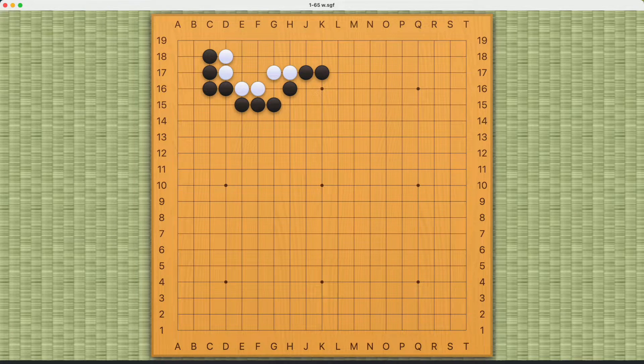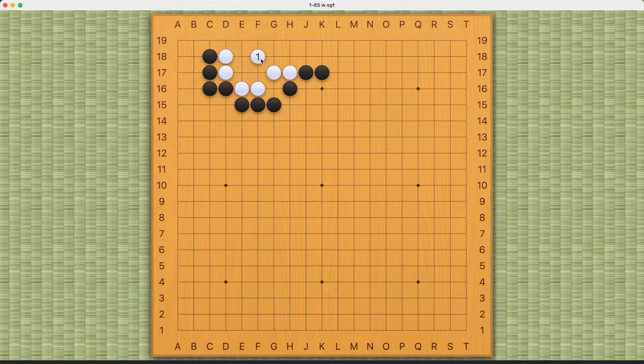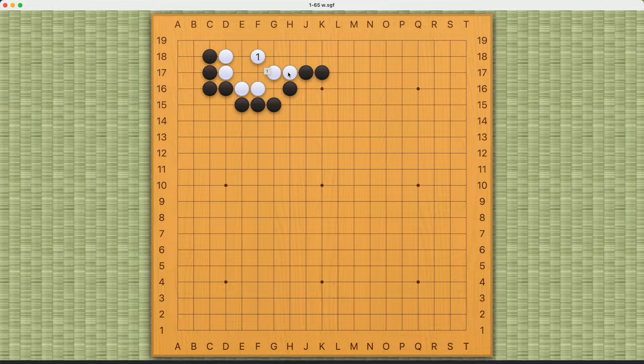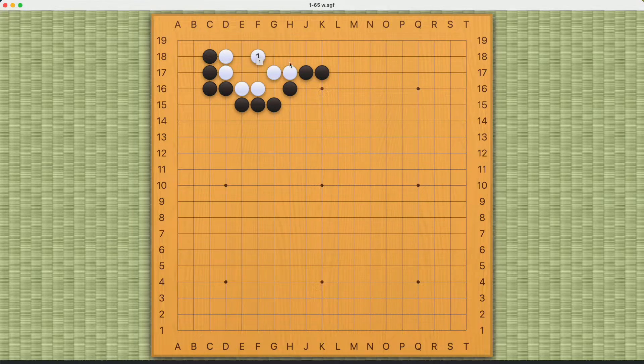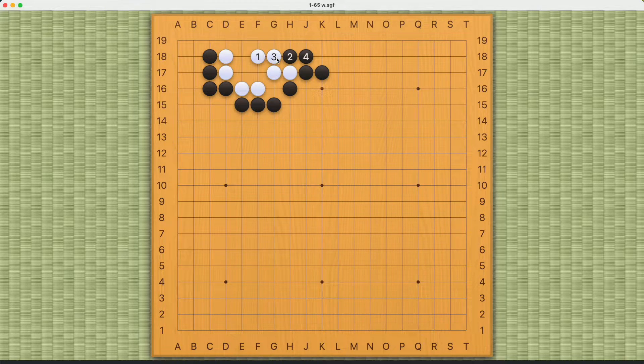White's objective here is to live and the move should be pretty obvious. It has to be here - this seems like the key point. There's not much black can do. If black reduces white's eye space from the outside, then white will be able to make an eye here.